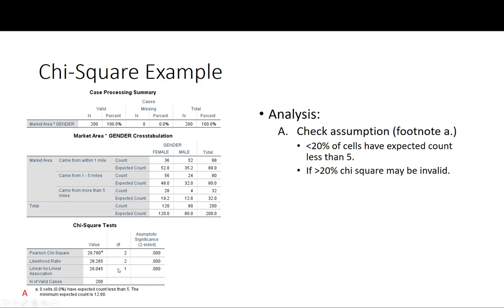In this case zero cells have a count less than 5, which is much less than 20% so we are fine. If it is more than 20% then the chi-square may not be valid depending on how far above 20% you are.